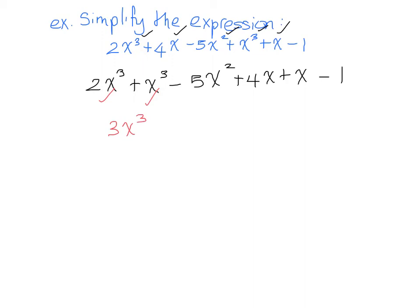Well, we only have one thing raised to the power of 2, so that part is just minus 5x squared. And we also have 4x plus 1x, which gives us 5x. And finally, there's only one constant, so we just put that down. And we've simplified our expression.